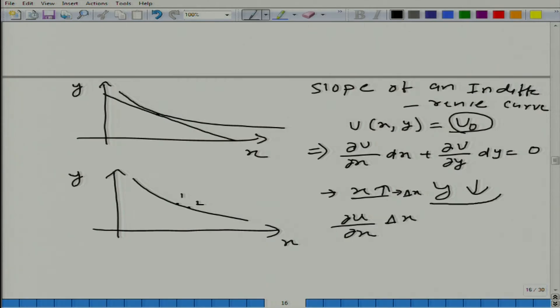Similarly, how much we will get here? ∂u/∂y multiplied by Δy. Not minus, it will take care of itself on its own, we do not have to put. So, total change is going to be sum of these two and this has to be equal to 0 if I want to bring this person back to the same utility level.